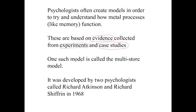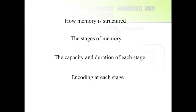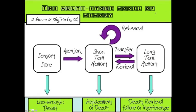What I want to look at in the next few minutes is a particular model called the multi-store model. It was developed by two psychologists both named Richard — Atkinson and Shiffrin — in 1968, and it was kind of the first proper model of memory. This is what it looks like. This is the multi-store model of memory, and it's a really simple model of memory.